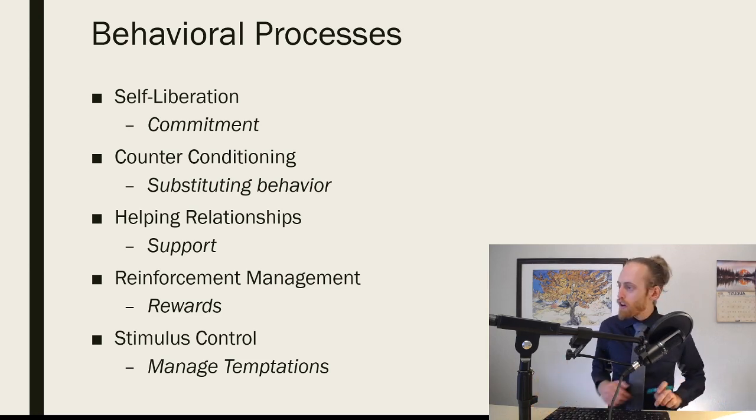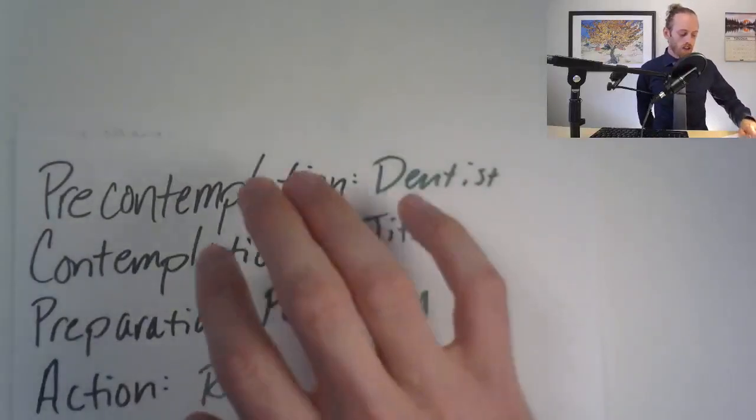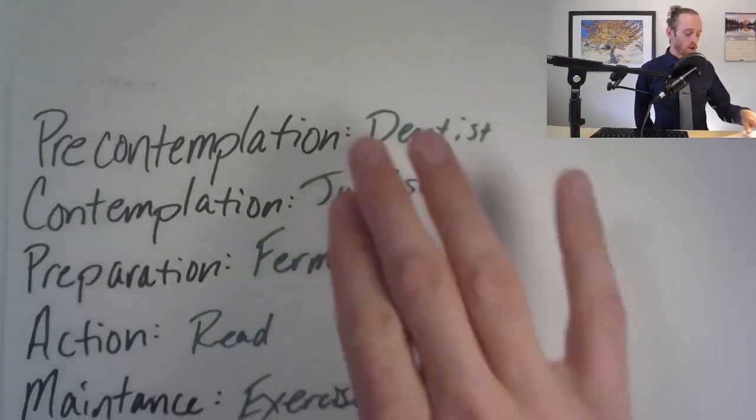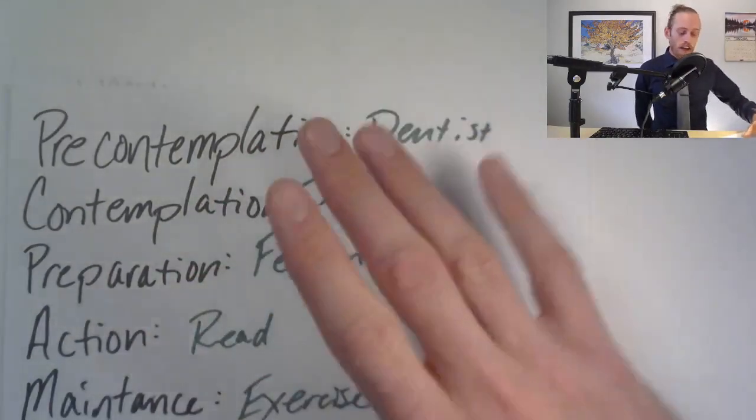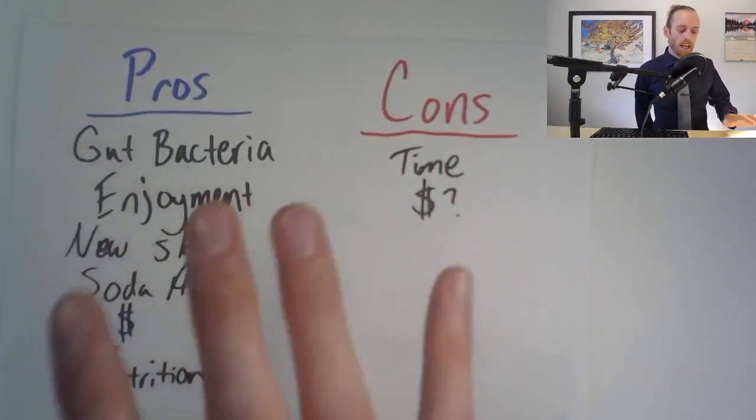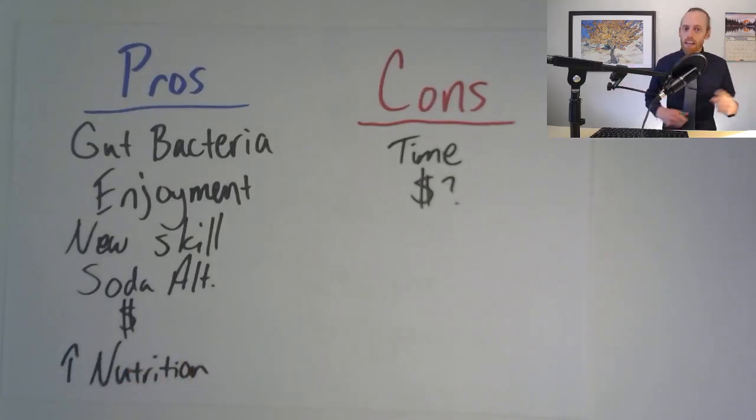We have one final thing for your assignment this week regarding this video. You're gonna make a pros and cons list. You're gonna look at your contemplation or preparation phase, think about some things you might want to implement for this semester, and then make a pros and cons list. There's some good research showing that making a pros and cons list can help you make that next step to actually make a change.